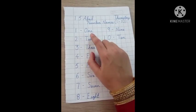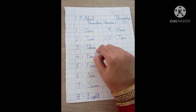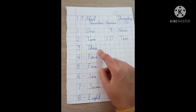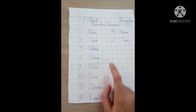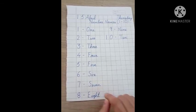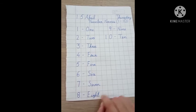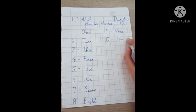Now, I will repeat the spellings. O-N-E-1, T-W-O-2, T-H-R-E-E-3, F-O-U-R-4, F-I-V-E-5, S-I-X-6, S-E-V-E-N-7, E-I-G-H-T-8, N-I-N-E-9, T-E-N-10. Theek hai?